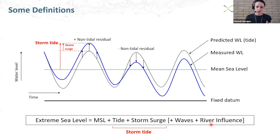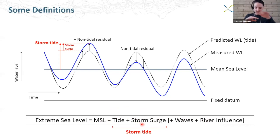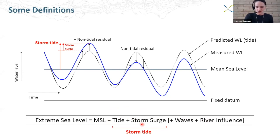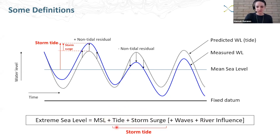So thinking back to the components of water level—what drove having two record-breaking events in one year? It was not the sea level piece. We looked at the storm surges, and it turns out that by separating out the tides from the surge, the storm surges actually were not all that big—more on the order of the type of event you see once in 10 years. So, jumping ahead to the cause: it really was this natural variation in tides.